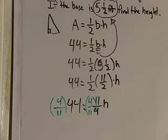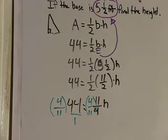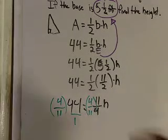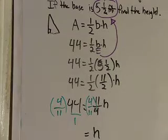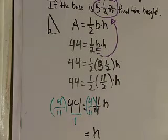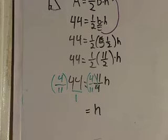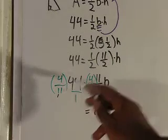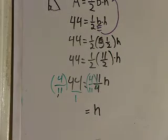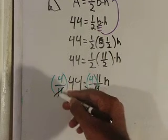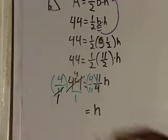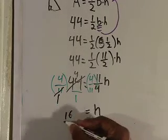So anytime you multiply a number by its reciprocal, the fraction disappears. So on our right hand side we just have an h. On the left hand side we got four over eleven times 44 over one. Well, this eleven in the denominator can reduce with this 44 in the numerator. So eleven divided by eleven is one, and 44 divided by eleven is four. So now you got four times four, which is sixteen, over one times one, which is one.